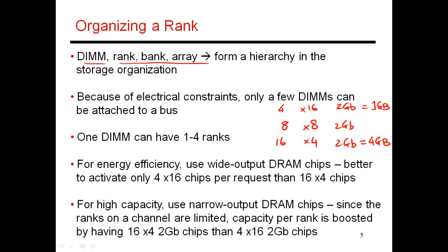If you're trying to support high memory capacity with the constraint that you can only have a few ranks on your channel, you would go with the higher-chip-count option — that's good in terms of capacity. However, when the CPU makes a request for a cache line, all chips in that rank are activated together to provide the entire cache line. So in the first case you activate four chips, whereas in the last case you activate 16 chips — clearly the first case is best in terms of energy efficiency, expending the least energy to service one cache line request.